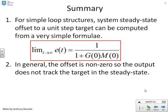So there's your summary. For simple loop structures, system steady state offset to a unit step target can be computed from a very simple formula. There it is. And in general, the offset is not 0.